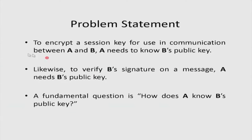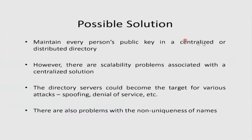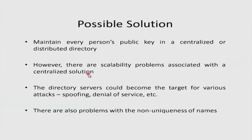How do I obtain B's public key? One approach could be to maintain every person's public key in a centralized or distributed directory — something like a website where you can say 'I want Bill Gates' public key.' But there are problems with this. There are scalability problems with a centralized solution. If everybody starts asking for somebody's public key from that centralized server, there could be congestion, though you can mirror it to reduce this.